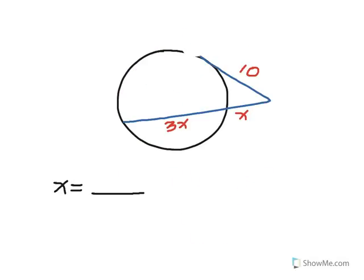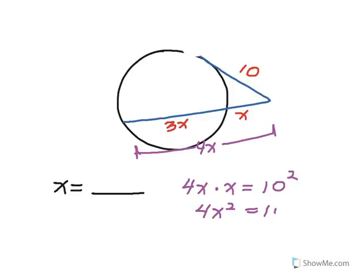For the last example, we again have a tangent segment and a secant segment drawn from a point outside the circle. The entire secant length is 3X plus X, or 4X. So the whole secant 4X times the external piece X equals the tangent of 10 squared. That gives 4X squared equals 100, so X squared equals 25, meaning X equals positive or negative 5. Since it must be a segment length, X equals 5. And that is it for circles. Thank you for joining me.